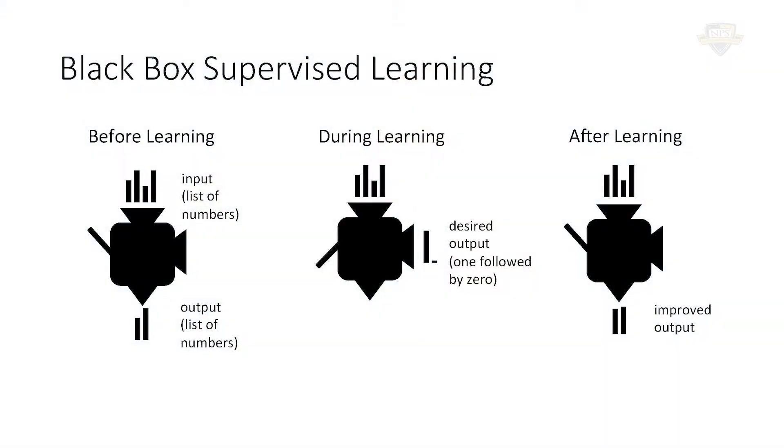This is not a talk on supervised learning — that was yesterday. For today, I'm going to adopt a black box model of supervised learning. That black blob is my supervised learner. Before learning, we present it with some input — always a list of numbers — and we get an output at the bottom, also a list of numbers. What those mean depends on the application. It's got a switch on the side; if you pull that switch down, we go into learning mode, where we present an input at the top and on the right we present what we would like the system to have produced.